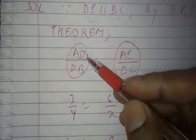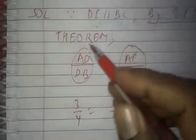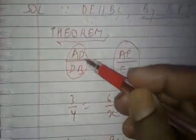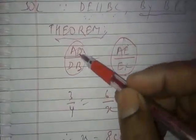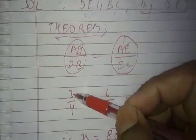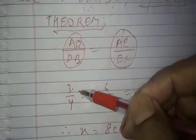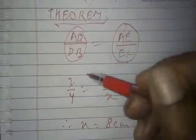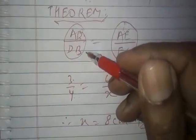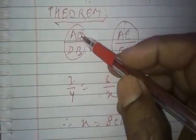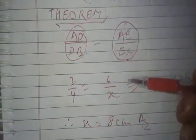The ratio will be AD/DB and AE/EC. Since AD/DB is equal to AE/EC by the basic proportionality theorem, we will put in the known values. AD is 3, DB is 4. Note that units cancel out when writing ratios. AE is 6 and EC is X.